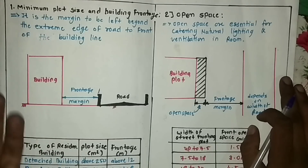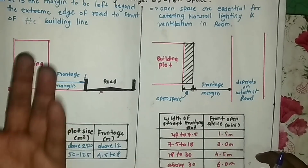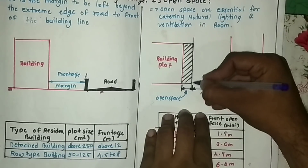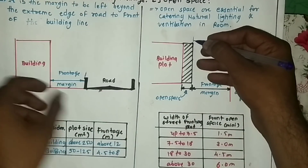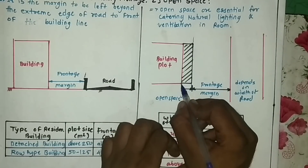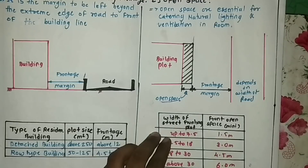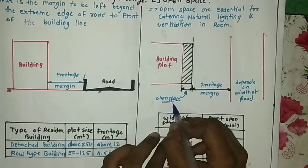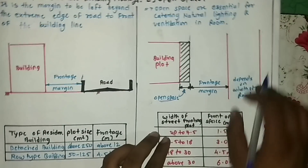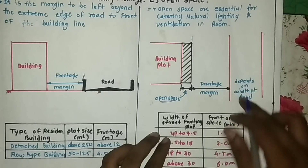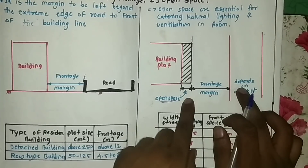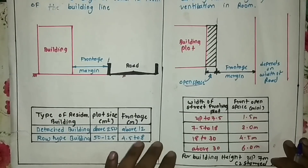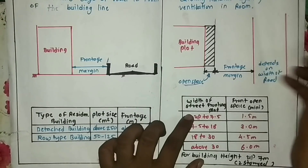From the building line you also have to keep some open space so you can gather natural lighting and ventilation. This is your frontage margin, this is your open space, and this is your road. Depending upon the road width, your required open space will change. I have a table to show how this open space margin changes according to road width.